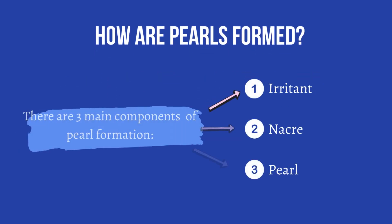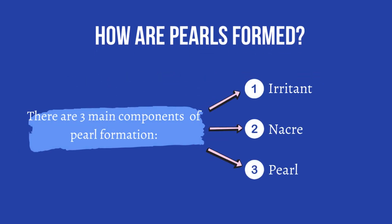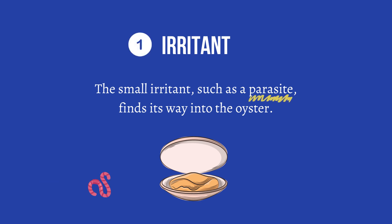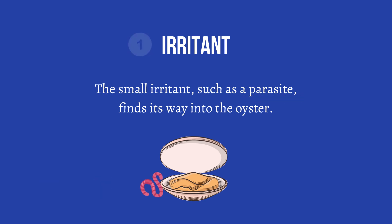How are pearls formed? There are three main components of pearl formation: irritant, nacre, and pearl. The small irritant, such as a parasite, finds its way into the oyster.